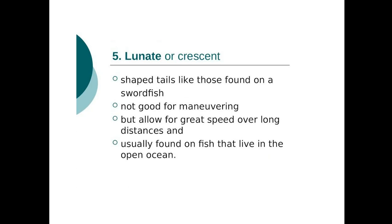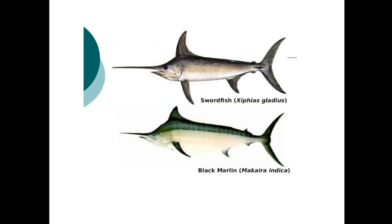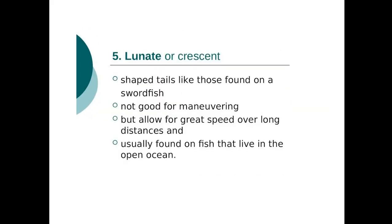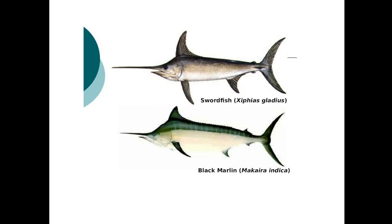The lunate or crescent-shaped tail — like a half moon — is found on swordfishes and black marlin. This tail type is not good for maneuvering, but allows for greater speed over long distances. Fishes that travel long distances, living in the open sea, typically have lunate or crescent-shaped tails — like swordfish or marlin — because it gives them great speed over long distances.